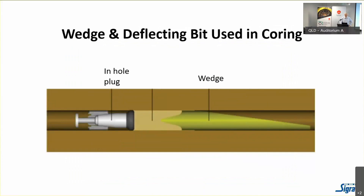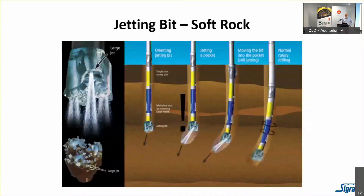Here are examples of bolt-on deflecting bits for soft rock — you push these along and they'll go in the direction you deflect them, with options to rotate if you need to cut something harder. For wedges, there's a Van Ruth plug which would be pumped through a wireline core string with a hardwood plug behind it, and a wedge that will deflect out of the hole. This still has its uses — dropping a wedge with a coring system is quite a good way of taking a sample.